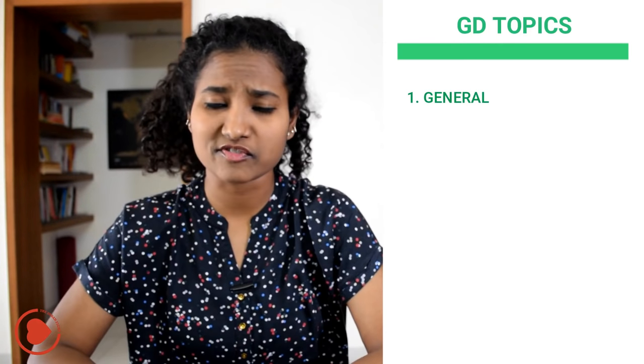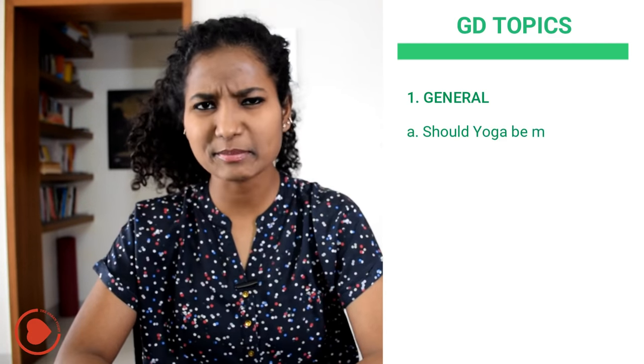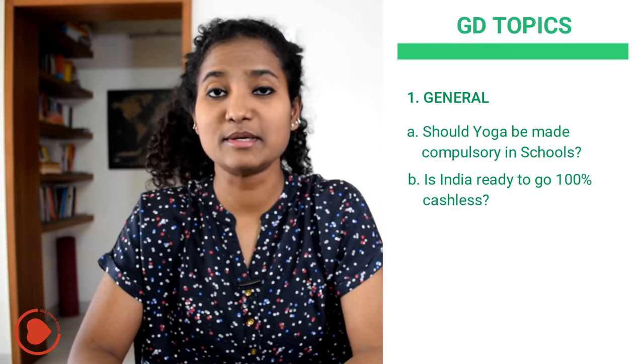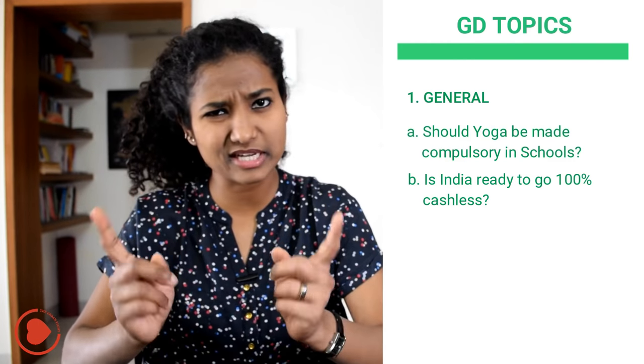A Group Discussion is where a set of candidates — say 10 to 12 — are given a topic and are asked to discuss among themselves for a set duration. The kind of topics given in a GD round can be broadly classified into 4 categories. The first is the general category, which can be related to facts, education policy of our country, current affairs, and so on. For example: Should Yoga be made compulsory in schools? Is India ready to go 100% cashless? The purpose of these topics is to find out how aware you are of what is happening around you.